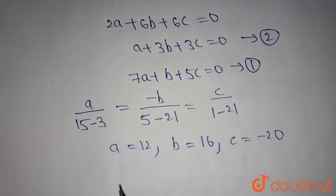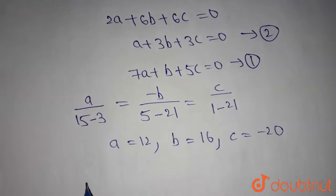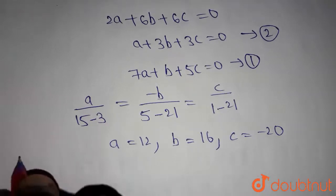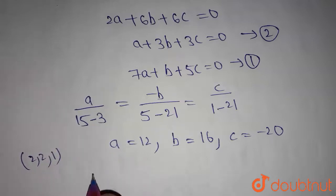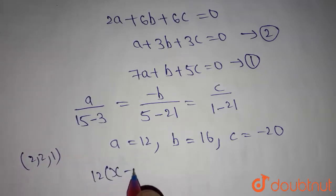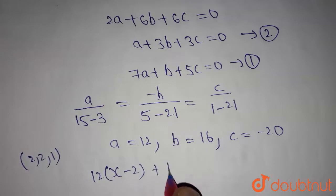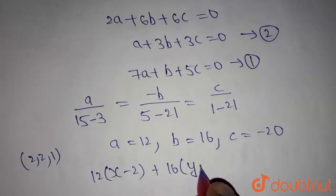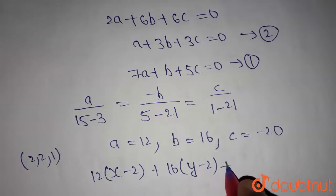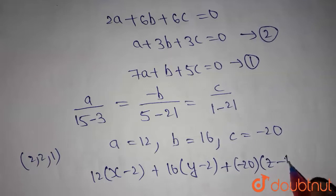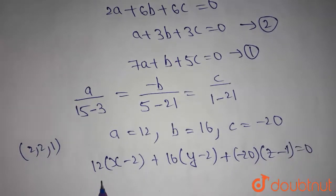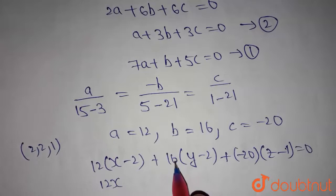Now we know the values a = 12, b = 16, c = −20. We can find the plane equation passing through point (2, 2, 1): 12(x − 2) + 16(y − 2) − 20(z − 1) = 0. Expanding: 12x + 16y − 20z.